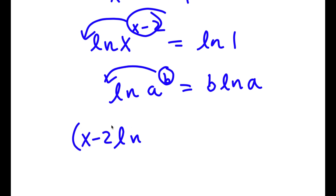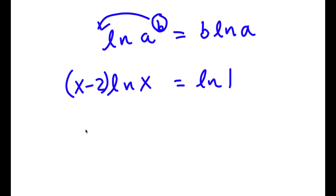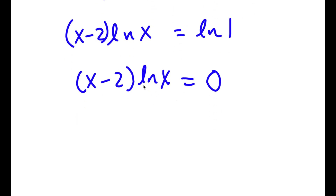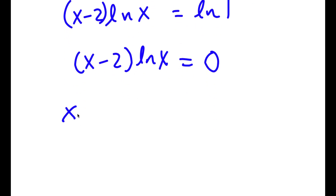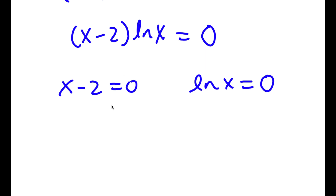So now I get x minus 2 times ln x is equal to ln 1. The value of ln 1 is simply equal to 0. So now I have x minus 2 times ln x is equal to 0. This gives me two equations: x minus 2 is equal to 0, and ln x is equal to 0. For x minus 2 equals 0, all I have to do is add 2 on both sides, and I get x is equal to 2.